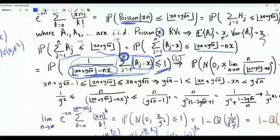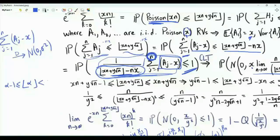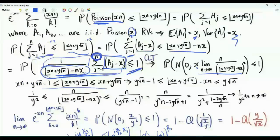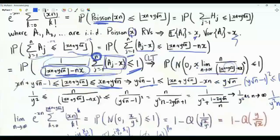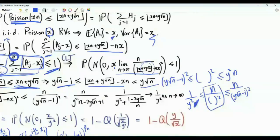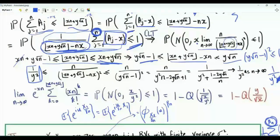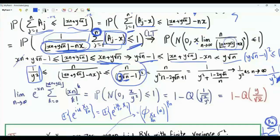We bound the floor function: the floor of alpha lies between alpha minus 1 and alpha. Subtracting xn from all sides, squaring, and taking the reciprocal gives bounds. The upper bound is 1 over (y square root n minus 1) all squared, and the lower bound is 1 over y squared n. Multiplying all sides by n, the middle term is exactly our limit of interest. The lower bound, 1 over y squared, does not depend on n. The upper bound, n over (y square root n minus 1) squared, also tends to 1 over y squared as n tends to infinity. By the sandwich theorem, the limit equals 1 over y squared.